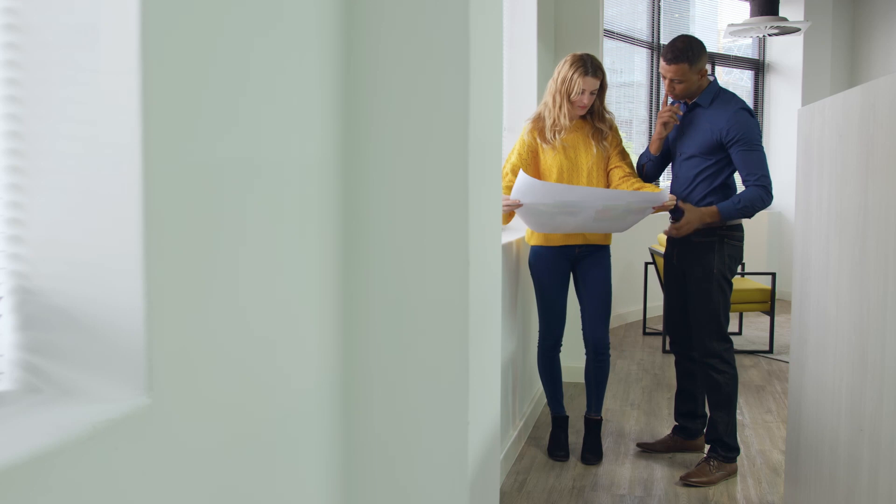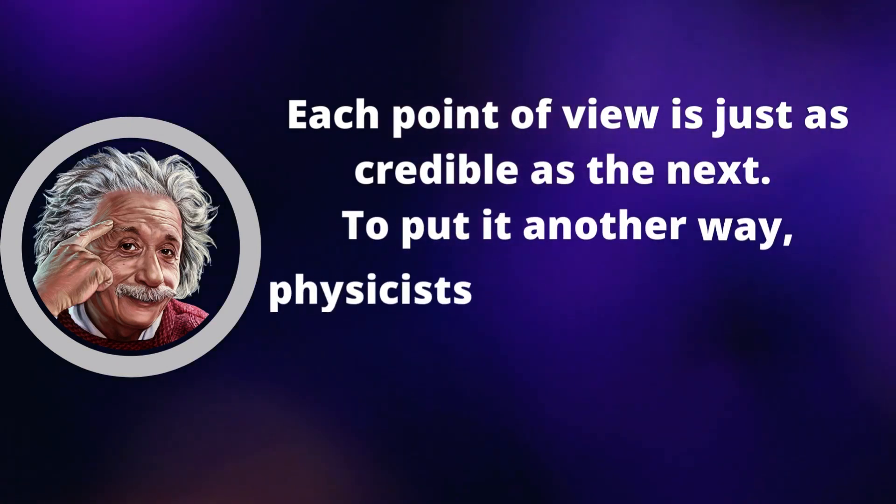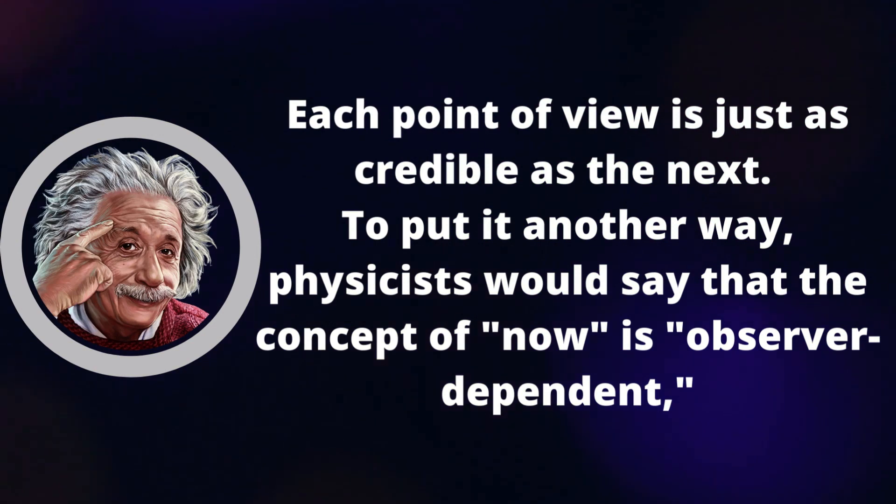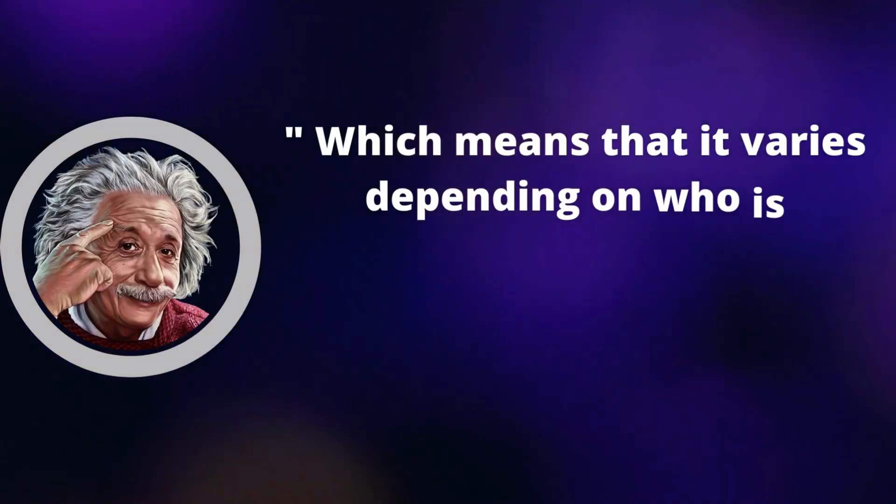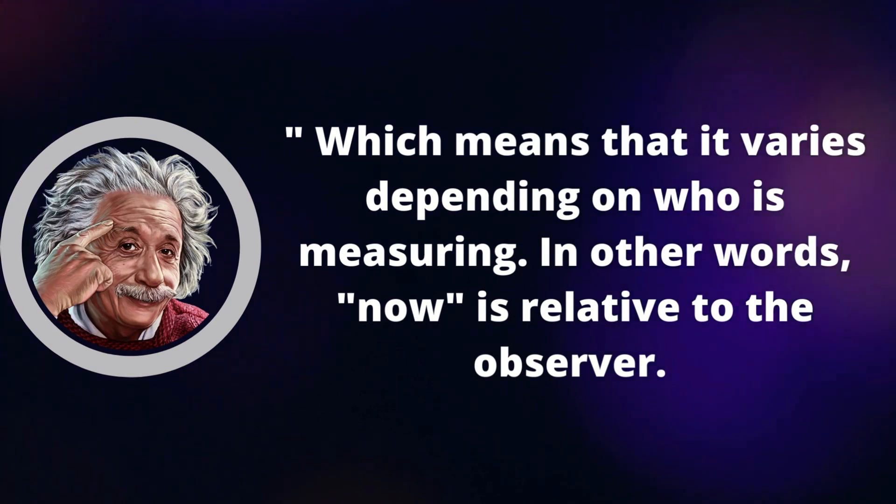Everyone discusses events now, but we never stop considering the time it takes light to travel. What exactly is taking so long? Why is it that we can't just agree on a now and move on with our lives? The fourth assumption that Einstein made is one that we can employ. Each point of view is just as credible as the next. To put it another way, physicists would say that the concept of now is observer dependent, which means that it varies depending on who is measuring. In other words, now is relative to the observer.